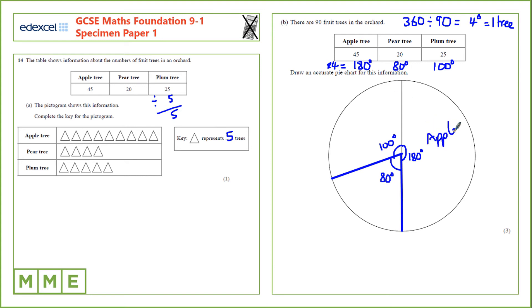This segment is apple, this is pear, and this one is plum.